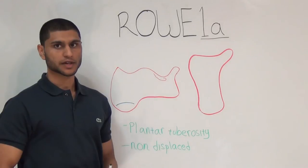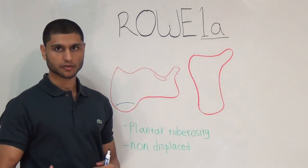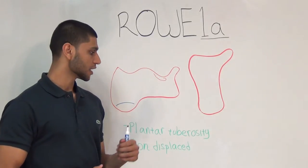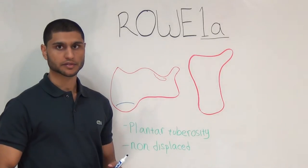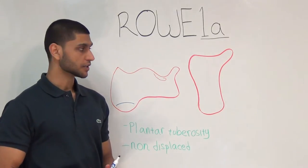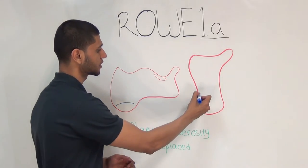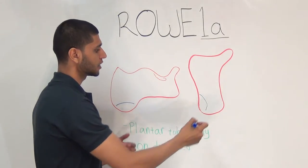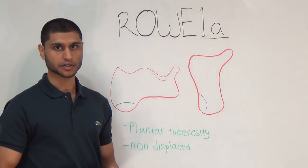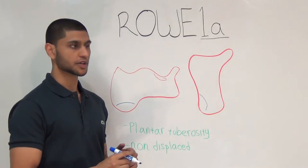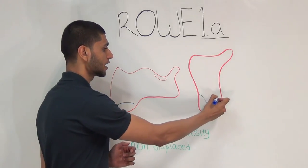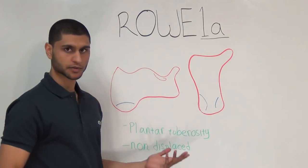Rowe 1a can affect either the medial or the lateral plantar tuberosity. If the feet are inverted during the time of injury, then the lateral plantar tuberosity is fractured. If the feet are everted during the time of injury, then the medial plantar tuberosity is fractured. These fractures are often non-displaced.